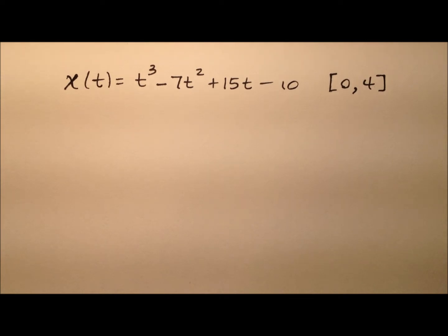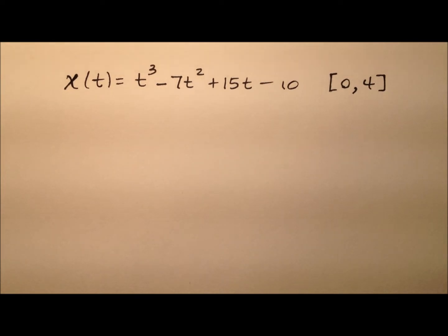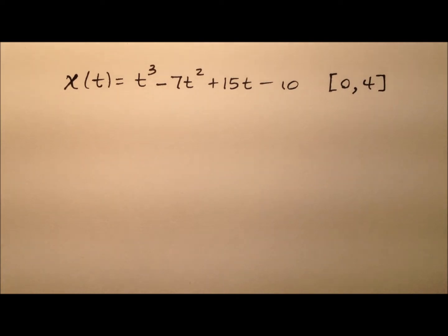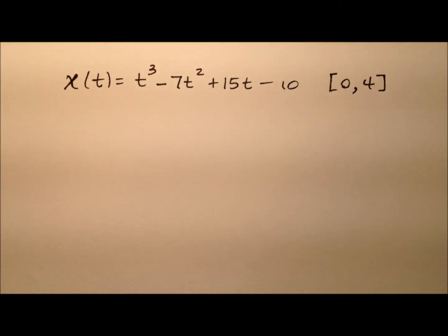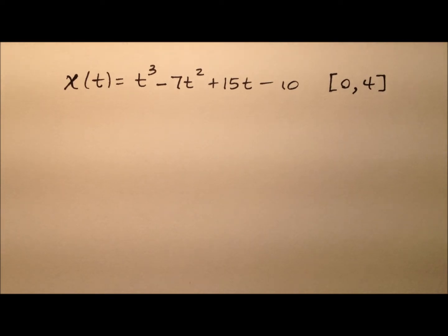In order for a particle to be speeding up, we need to address its velocity and its acceleration. For example, if its velocity is positive, the particle is moving to the right. And if its acceleration is also positive, it means the particle is being pushed to the right — so it'll be speeding up. That's the relationship between velocity and acceleration.